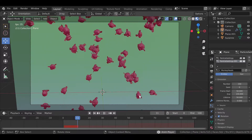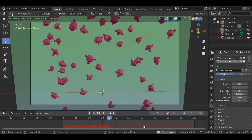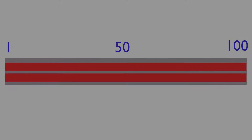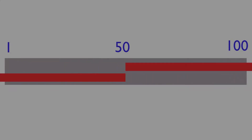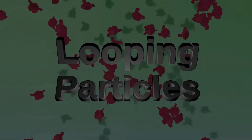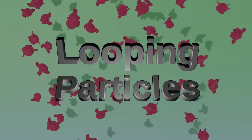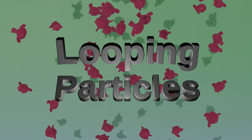If you're still confused about what all this offsetting was, it is just taking one set of particles, duplicating it, and then moving them both so that the start and end points of the timeline is in the middle of both of them. And that's it — how to make particles loop in Blender.